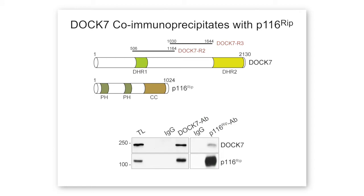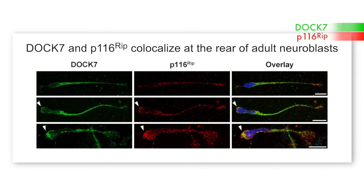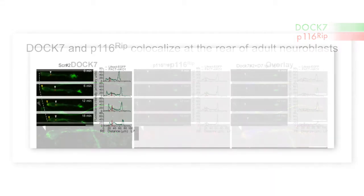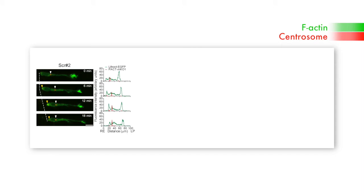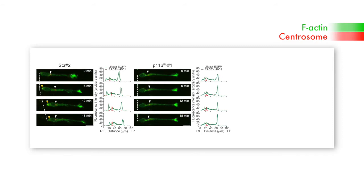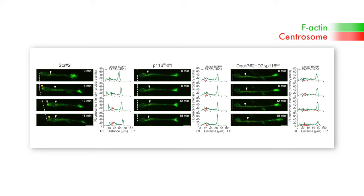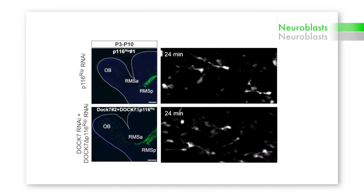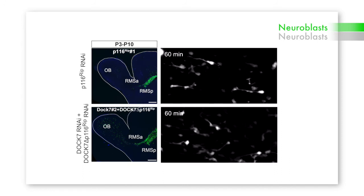That region interacts with a protein called P116-RIP, whose function had been somewhat mysterious in an in vivo context. It had been implicated in actomyosin contractility, but had not been studied in the context of migration in vivo. The actin cytoskeleton propels soma translocation by forming a cup-shaped structure at the rear of the cell. This structure failed to form in neuroblasts lacking P116-RIP, as well as in cells where wild type DOCK7 was replaced with a mutant unable to bind this actin regulatory protein. The migration of these cells was thus impaired, even though they could form a normal leading process.